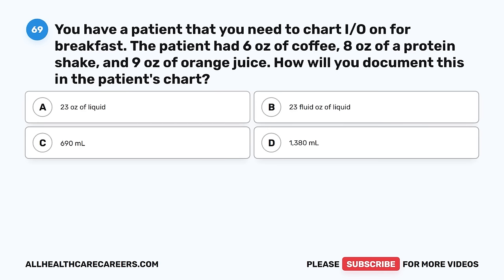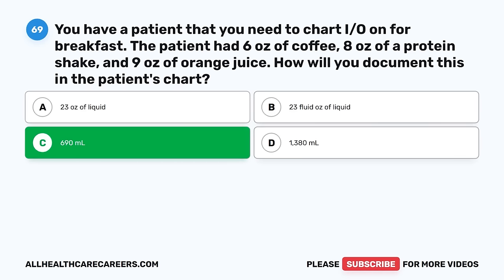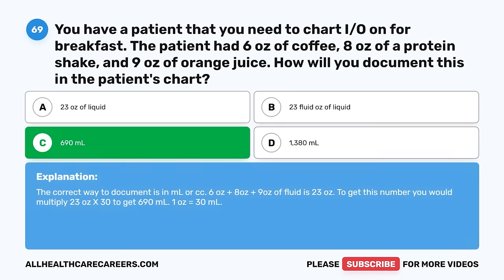Question 69. You have a patient that you need to chart I&O on for breakfast. The patient had 6 ounces of coffee, 8 ounces of a protein shake, and 9 ounces of orange juice. How will you document this in the patient's chart? A. 23 ounces of liquid. B. 23 fluid ounces of liquid. C. 690 milliliters. D. 1,380 milliliters. The correct answer is C, 690 milliliters. The correct way to document is in milliliters or CC. 6 + 8 + 9 = 23 ounces. Multiply 23 ounces times 30 to get 690 milliliters — one ounce equals 30 milliliters.